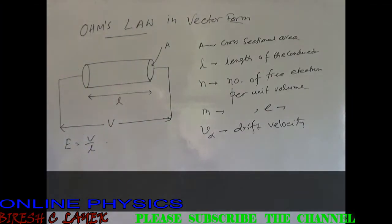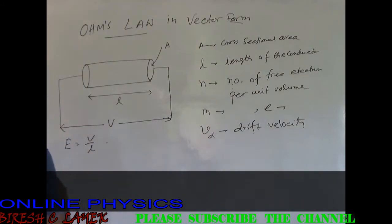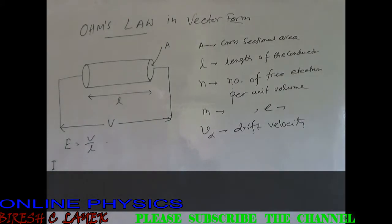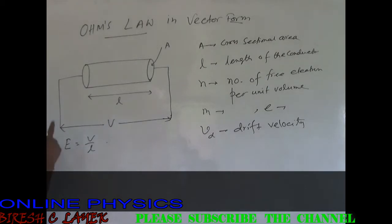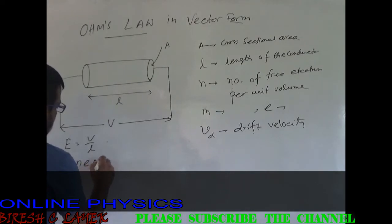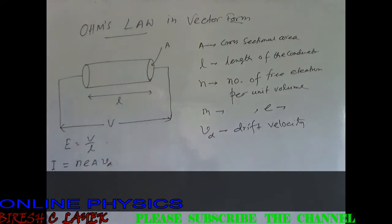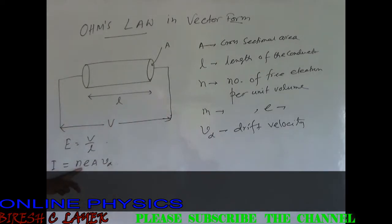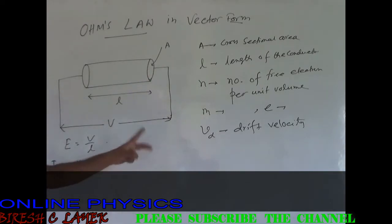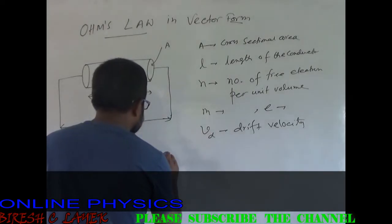We know two things. One, we have earlier established a relation between current and drift velocity. If current I flows through the conductor, then current I equals n·e·A·v_d, where n is the number of free electrons per unit volume, e is the electronic charge, and A is the cross-sectional area.